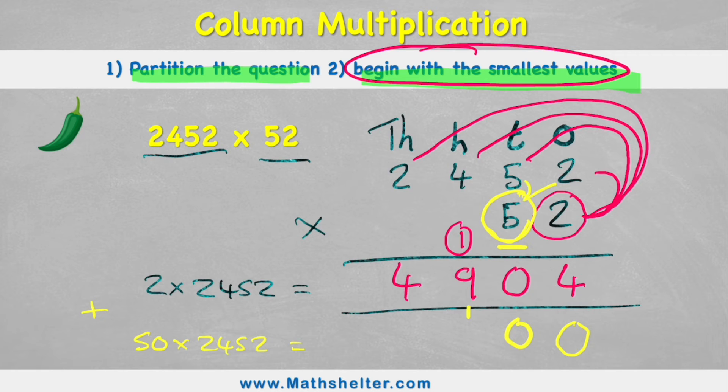Next question would be 5 times 5. 5 times 5 is 25, plus my 1, 26. Next one is 5 times 4. 5 times 4 is 20, plus my 2, 22. And finally, my last question is 5 times 2. 5 times 2 is 10, plus my 2 is 12. So my answer to 50 times 2,452 is 122,600.